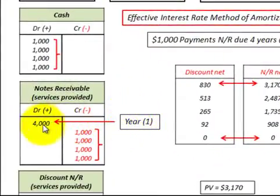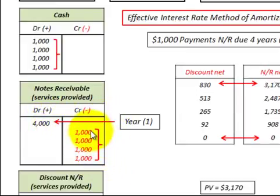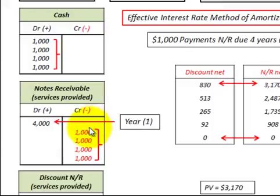So in year one, we have a $4,000 notes receivable. And then at the end of each of the next four years, we receive a payment of $1,000 for each year on that notes receivable. That payment would increase our cash by $1,000 for each of the years that we receive that payment.